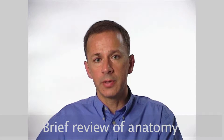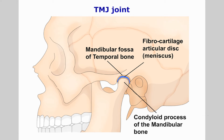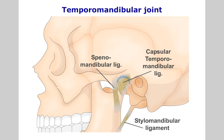We begin with the temporomandibular joint or TMJ. The TMJ is a synovial joint formed between the mandibular fossa of the temporal bone and the condyloid process of the mandible. The joint contains a fibrocartilaginous articular disc and is surrounded by a capsule. It is supported by the lateral temporomandibular, sphenomandibular and stylomandibular ligaments.